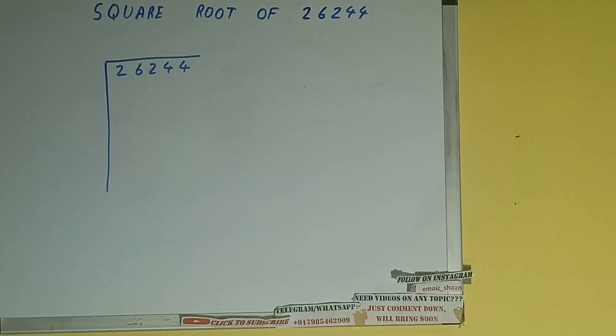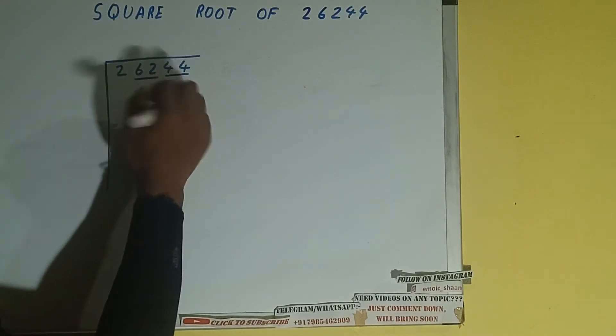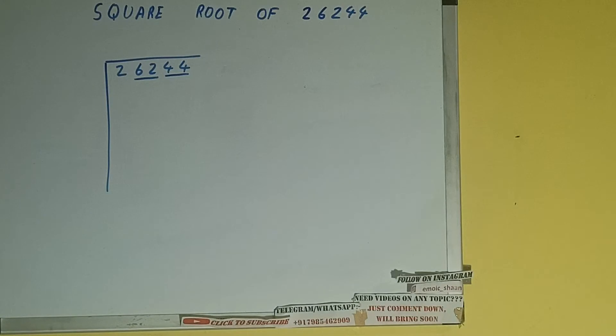Next thing we need to do is form pairs from the right-hand side. So one pair will be this, one pair will be this, and these two will be left out. So first we'll write this two, and then we'll bring down the pairs.